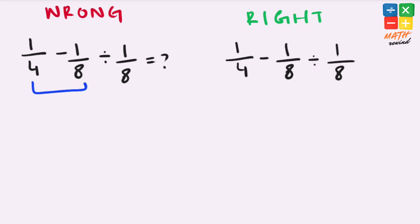1 over 4 minus 1 over 8. We need to find a common denominator which is 8, and the numerator becomes 2 minus 1. Our expression simplifies to 2 minus 1 over 8 divided by 1 over 8. 1 over 8 divided by 1 over 8 equals 1.